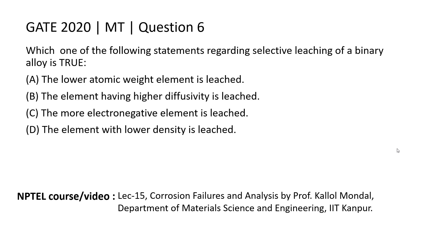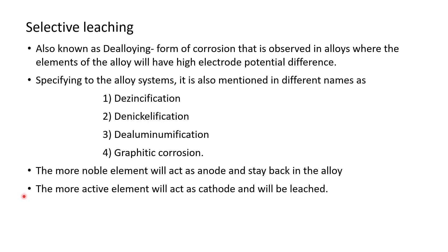So let us look at what selective leaching means. Selective leaching, also known as dealloying, is a form of corrosion that is observed only in alloys, most commonly in binary alloys, where the elements of the alloy will have high electrode potential difference. One of the elements in the alloy will get selectively removed or leached — hence the name selective leaching.